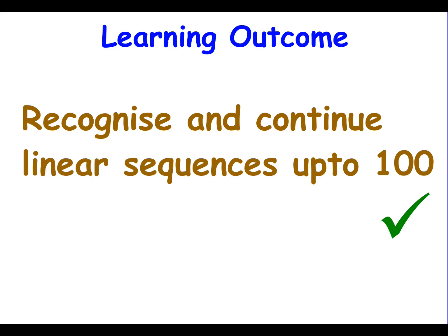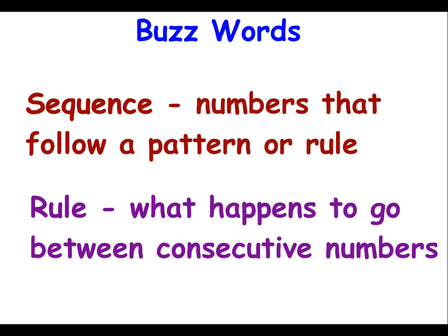And that completes the learning outcome to recognize and continue linear sequences up to 100. The buzzwords are a sequence, which is numbers that follow a pattern or a particular rule. And a rule. This is what happens to go from one number to the next consecutive number. That concludes the video. If you'd like more practice on sequences, then please go to Moodle where there are worksheets or contact your teacher.